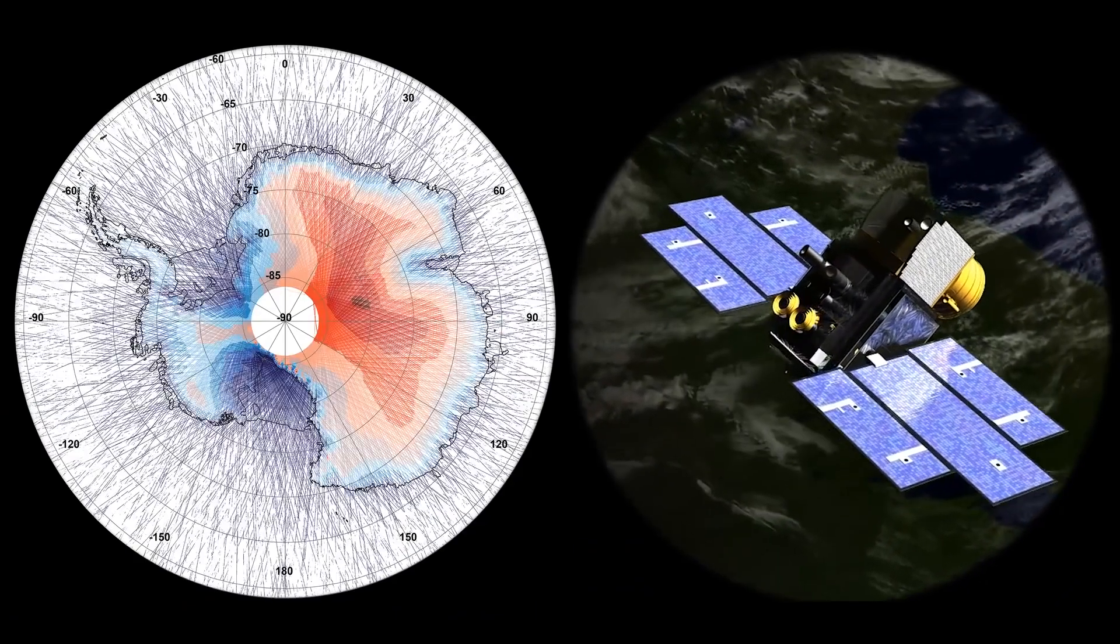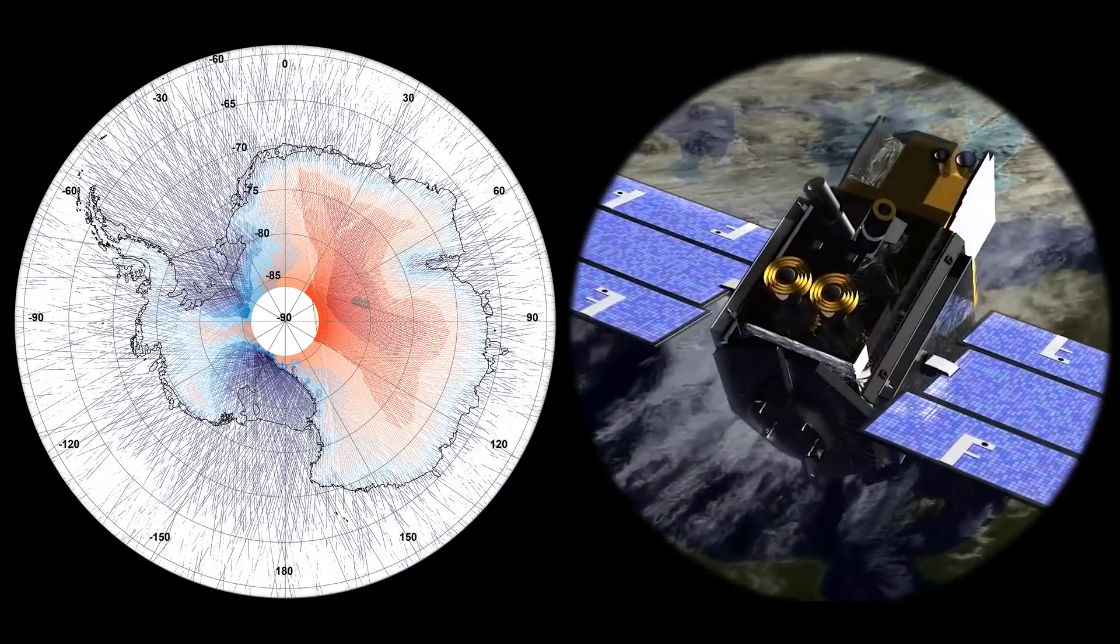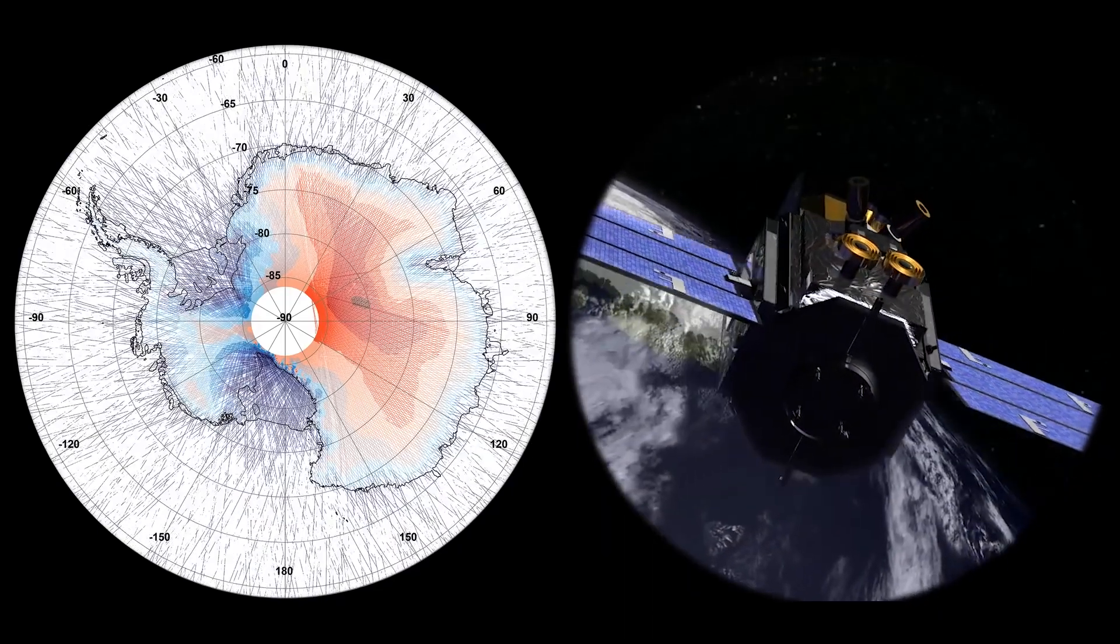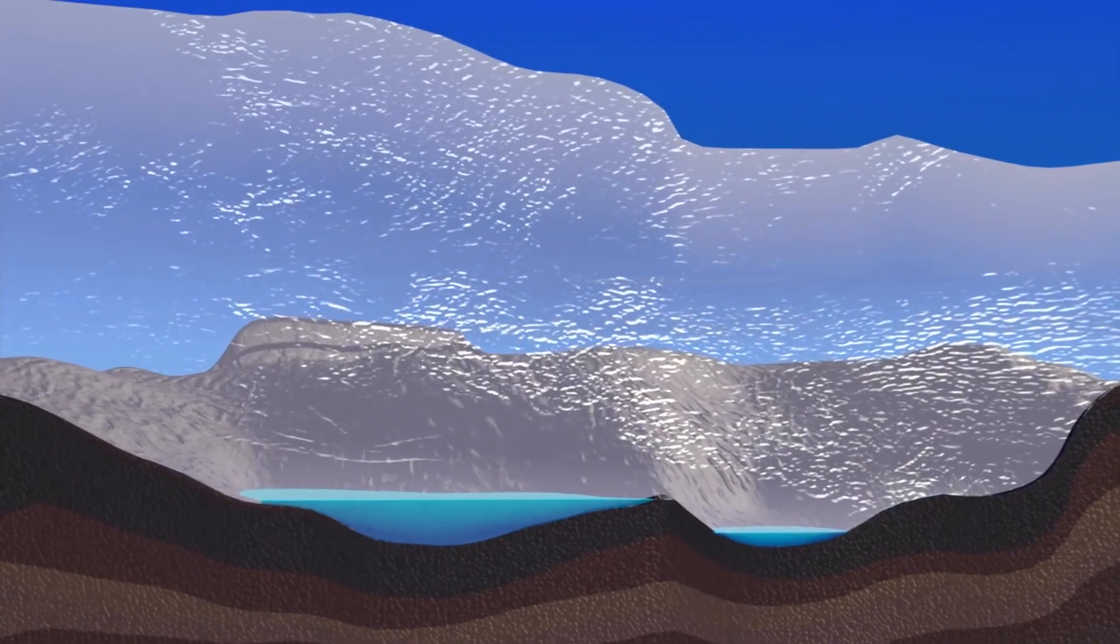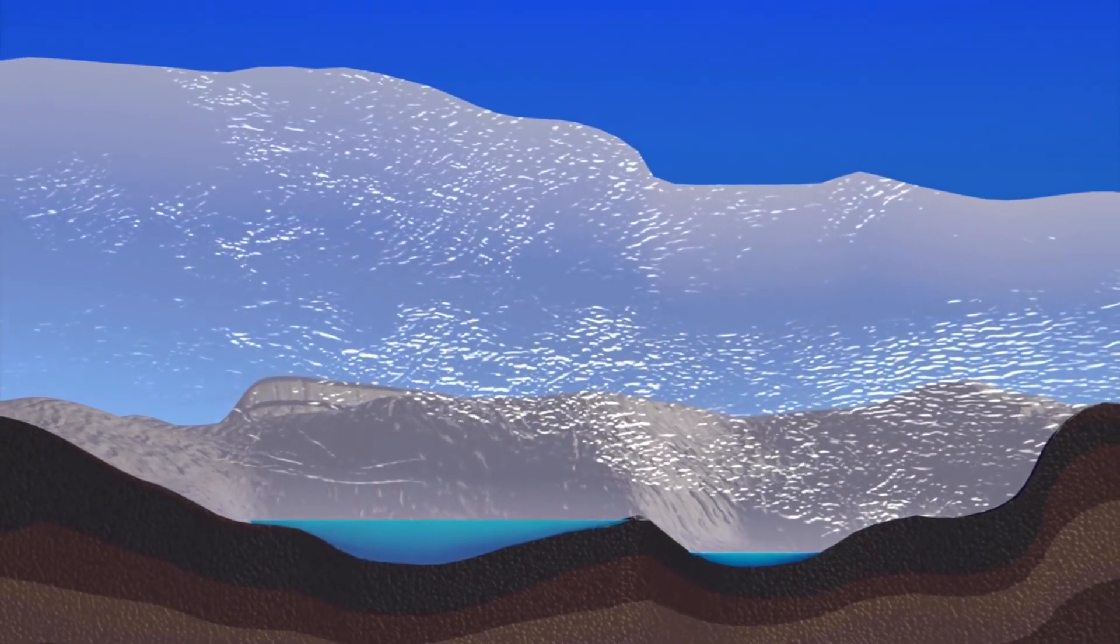But in 2007, laser measurements of the ice surface from NASA's ICESat satellite were used to infer what was happening far below. And a much more interesting picture was revealed.